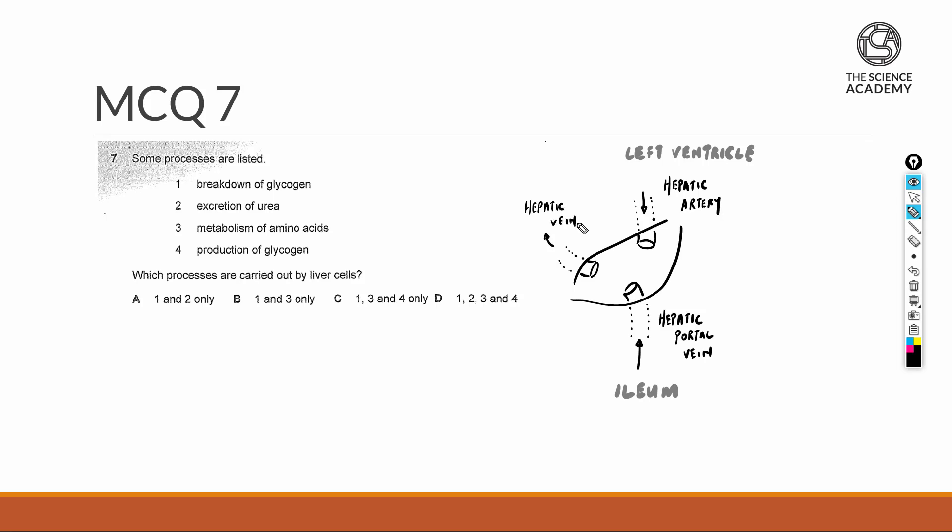The hepatic vein carries waste like urea that the liver produces during deamination of amino acids, as well as carbon dioxide and water produced via aerobic respiration. The destination is back towards the vena cava of the heart.